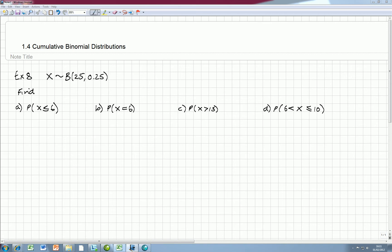In this problem, x varies as a binomial distribution. There's 25 trials, and the probability of success of one trial is 0.25. The question's asking us, first of all, to find the probability that x is less than or equal to 6. That's a straightforward question. We can go straight to the table and find that answer.